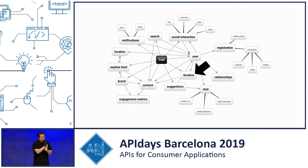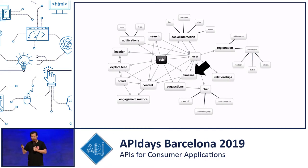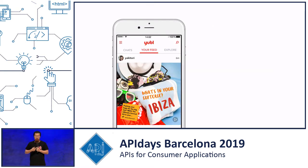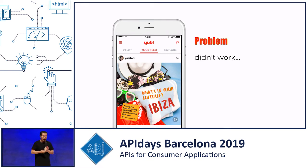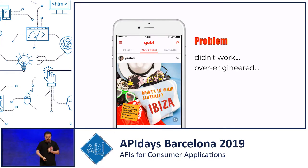As we got more comfortable writing Lambda functions, testing them, running and monitoring them in production, we started moving towards a more critical part of the system. Like other social networks, we have a timeline feature where you can see posts from all the people you follow. The problem with our implementation was that it just didn't quite work — and it was also really over-engineered to the point that no one could debug it.